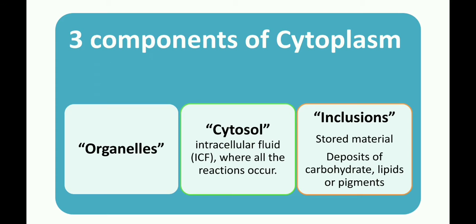The second component of the cytoplasm is the cytosol. Cytosol is what we call intracellular fluid (ICF), where all the reactions occur; we also call it ground plasma or cytoplasmic matrix. It is present in both eukaryotic as well as prokaryotic cells. In eukaryotes, it is present outside the nucleus and inside the plasma membrane. The main component of the cytosol is water, which also has dissolved ions, small molecules, and proteins. Students, cytosol and cytoplasm, though different terms, are not the same — cytosol is a component of the cytoplasm.